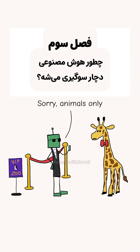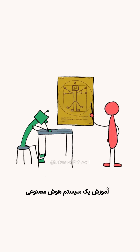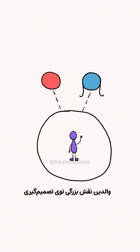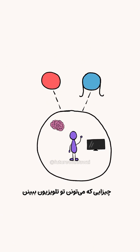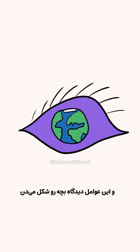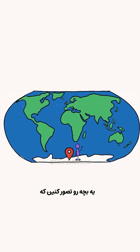How AI becomes biased. Training an AI system is like raising a child. The parents play a big role in deciding the values they teach them, what they can watch on TV, and where they live. And these factors shape a child's worldview.